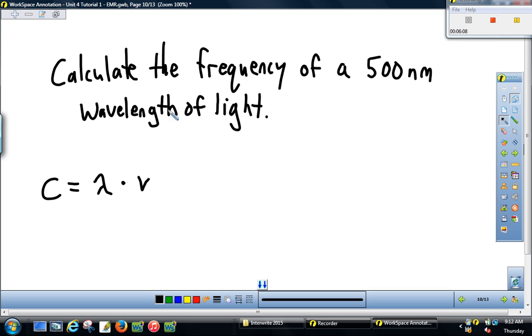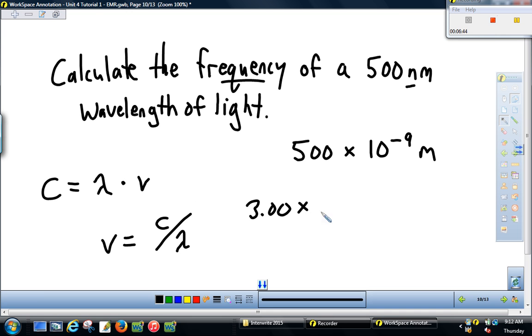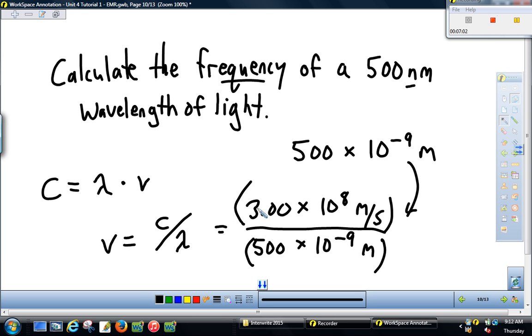So calculate the frequency of a 500 nanometer wavelength of light. Well, I know 500 nanometers is equal to billionths of a meter. And so billionths is times 10 to the negative ninth. And so 500 nanometers is equal to 500 billionths of a meter, which looks like that in scientific notation. And so I'm solving for frequency. So frequency, which looks like a V, this Greek letter nu, is equal to the speed of light divided by the wavelength. And so you can plug in the speed of light, which is 3 times 10 to the eighth meters per second. Plug in the wavelength in meters. When you do this in your calculator, I like to put my numbers in scientific notation in parentheses. And then you can solve.